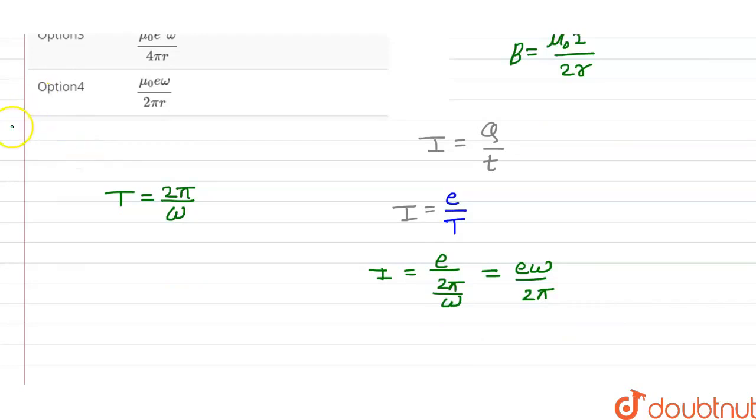Divided by 2π divided by ω. ω divided by 2π. We have the value of current: current is charge multiplied by ω divided by 2π. Now we can find the magnetic field B is equal to...